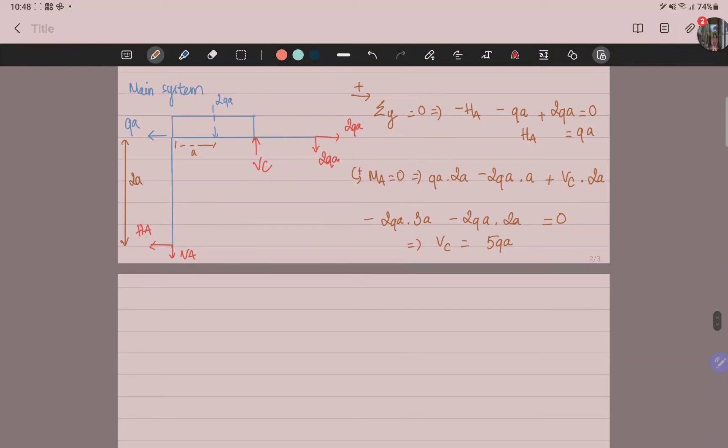Finally, you sum the forces in the x direction. Minus VA plus VC minus 2QA equals zero. You apply the VC equals 2QA like this, so you can have VA equals 2QA.